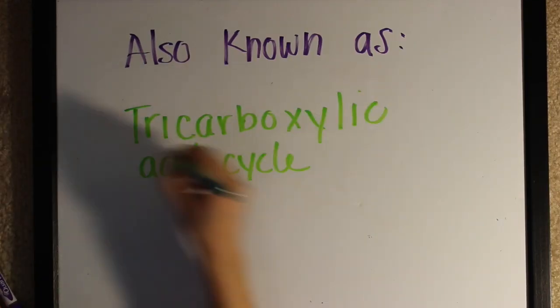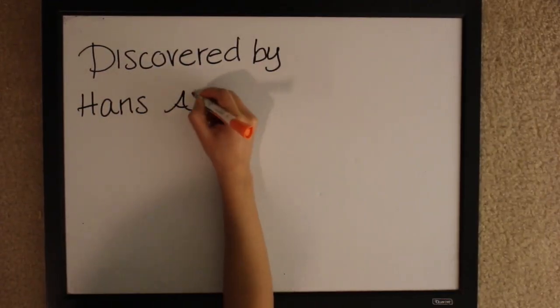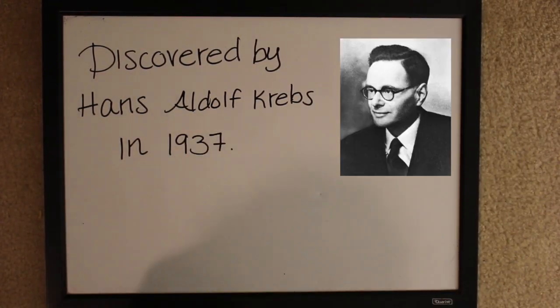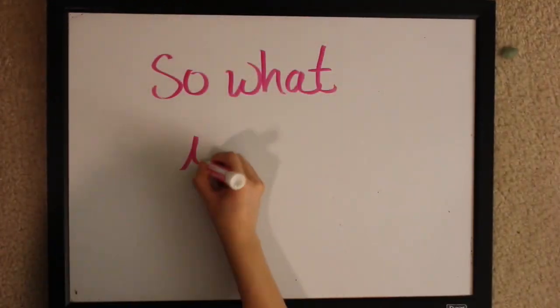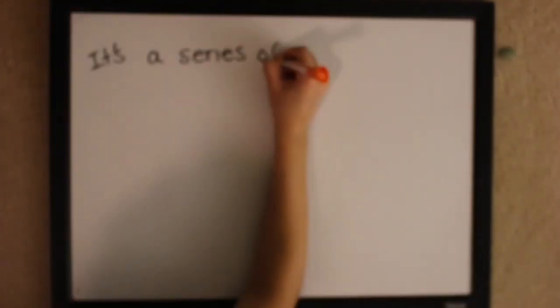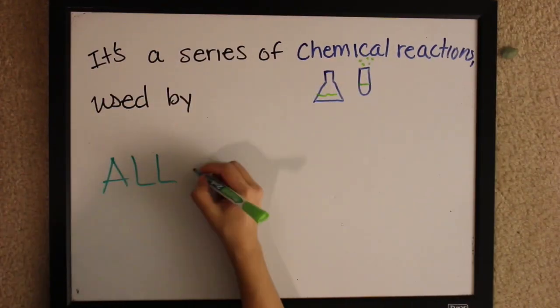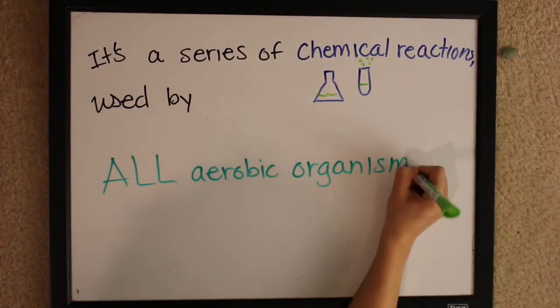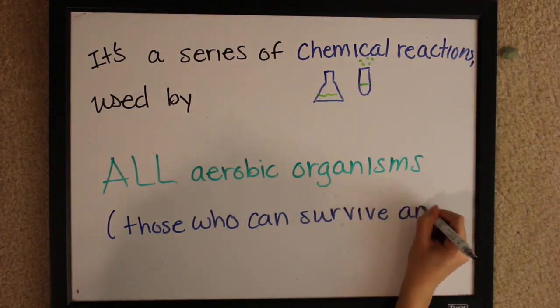Also known as the tricarboxylic acid cycle or the Krebs cycle, discovered by Hans Adolf Krebs in 1937. So what exactly is it? It's a series of chemical reactions used by all aerobic organisms, those who can survive and grow in an oxygenated environment, kind of like you and me.